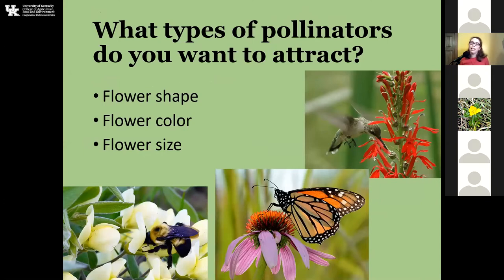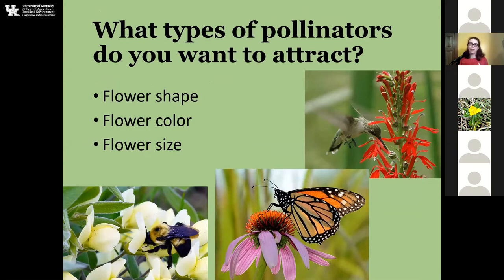Now, as we're choosing our plants, think about what type of pollinators you want to attract. If you want hummingbirds, then you want to look at something that's red with a nice long flower tube. Hummingbirds will go to other colored flowers, but to really attract them and get them in, it's red and those long flower tubes. This is cardinal flower here — it's a native flower and an absolute hummingbird magnet. We'll talk about it more later.